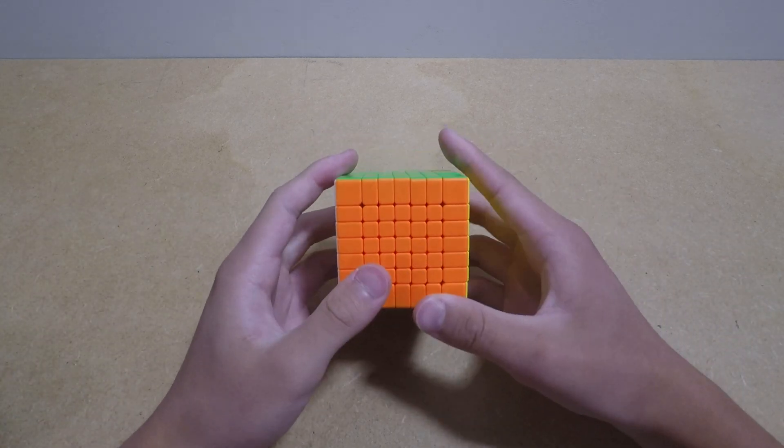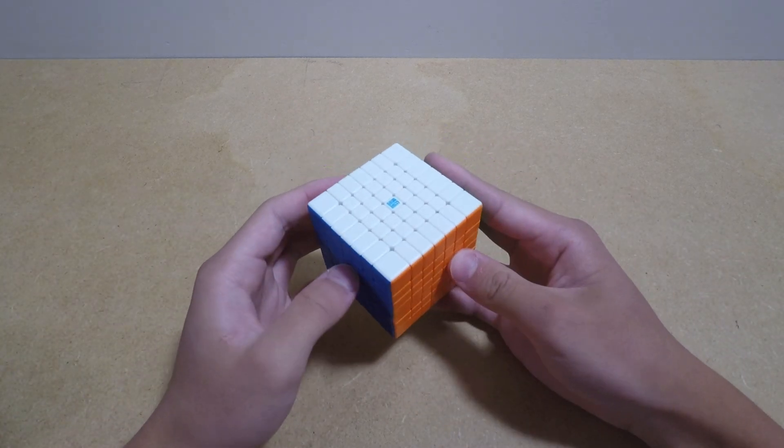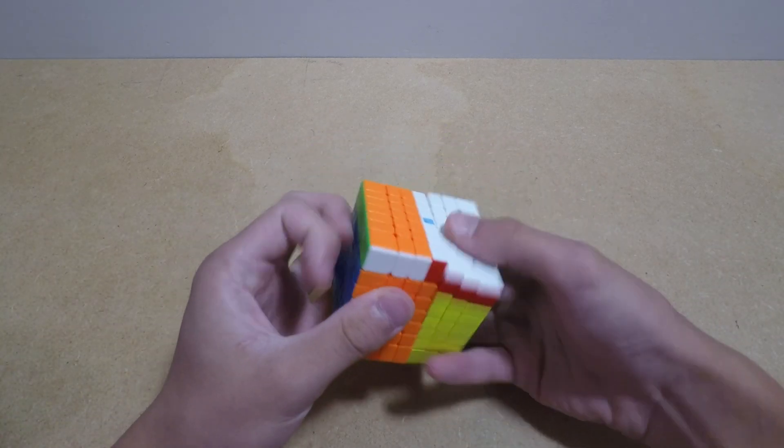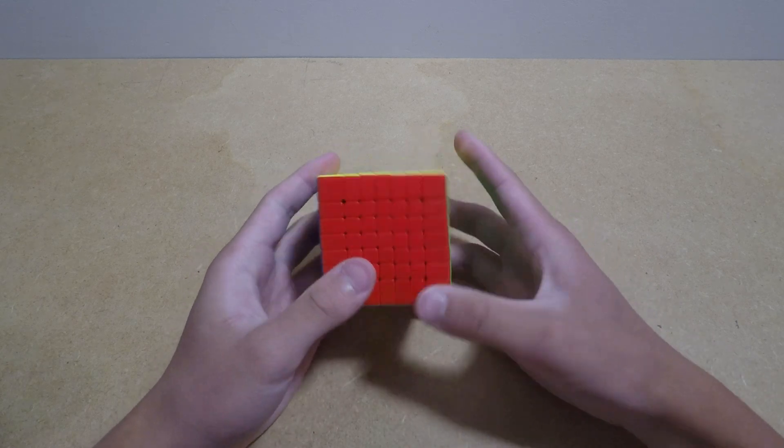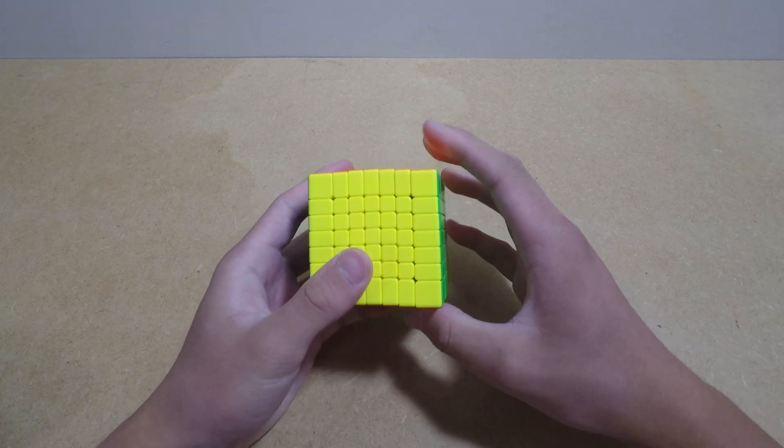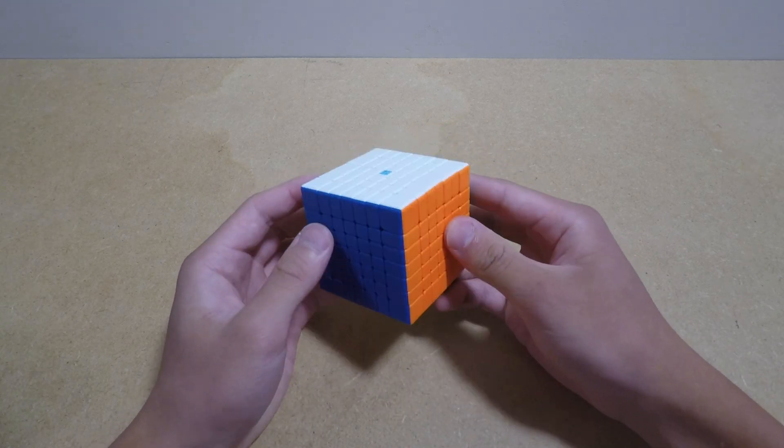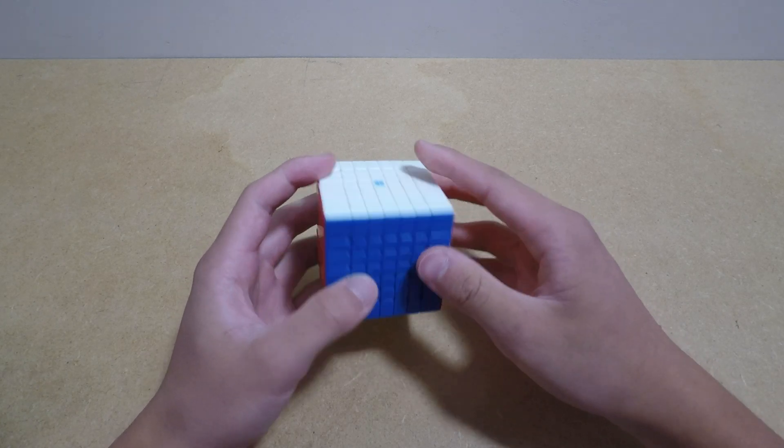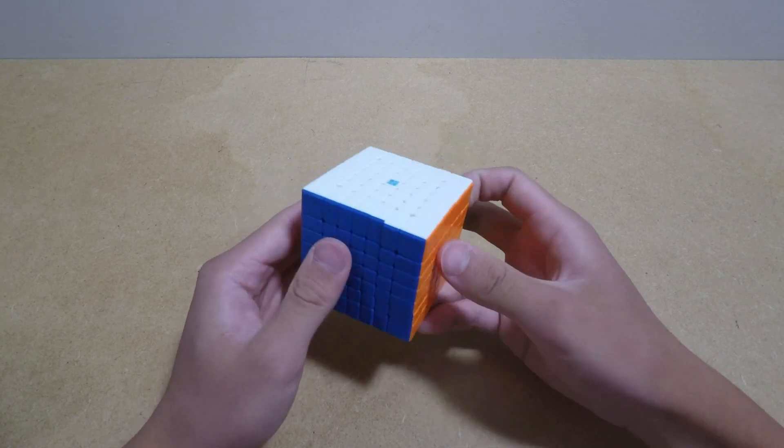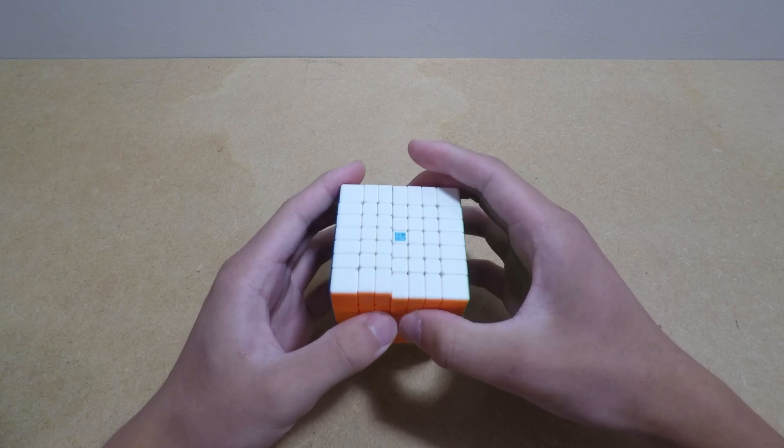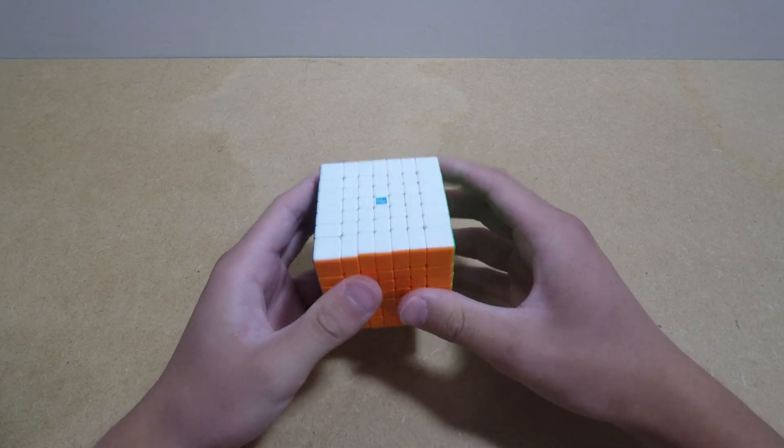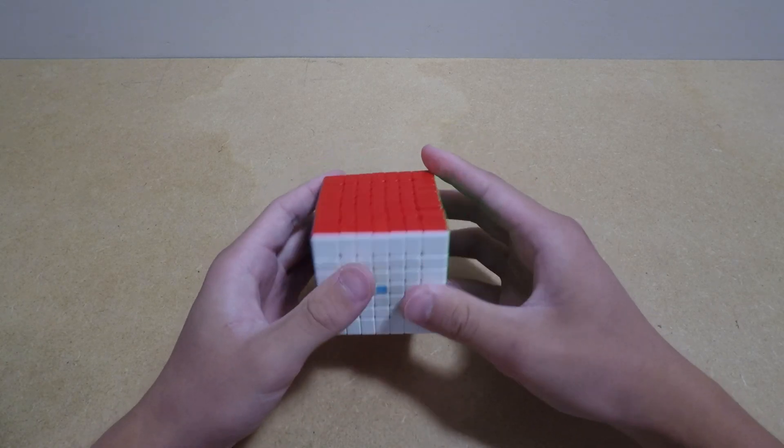All right, so this is gonna be a tutorial on how to mod the Meilong 7x7. This is pretty much the best 7x7 right now. A lot of people find it better than the Alphu, but you need to do some work to make it good. The mods we're gonna be doing are Florian modding, adding core magnets, Dorito mod, which is just weight reduction in the inner layers, and also adding some washers to the center pieces to prevent damage to the core.